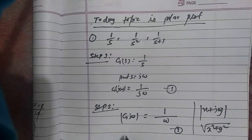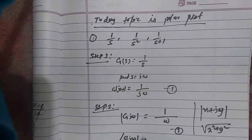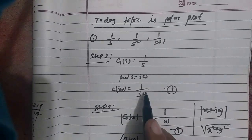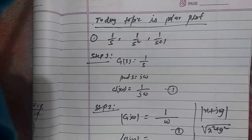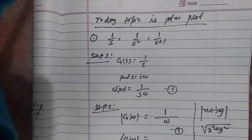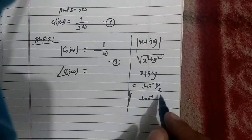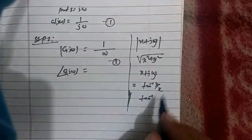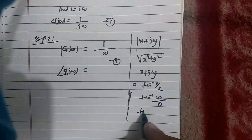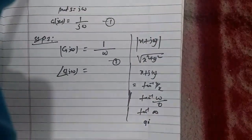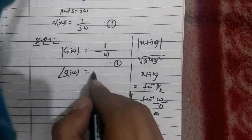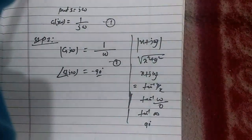The phase angle of G(jω) — since G(jω) = 1/(jω), the angle of x + jy is tan⁻¹(y/x), which is the imaginary part divided by the real part. Here, tan⁻¹(ω/0) = tan⁻¹(∞) = 90°. But since this 90° is in the denominator, the angle of 1/(jω) becomes −90°.